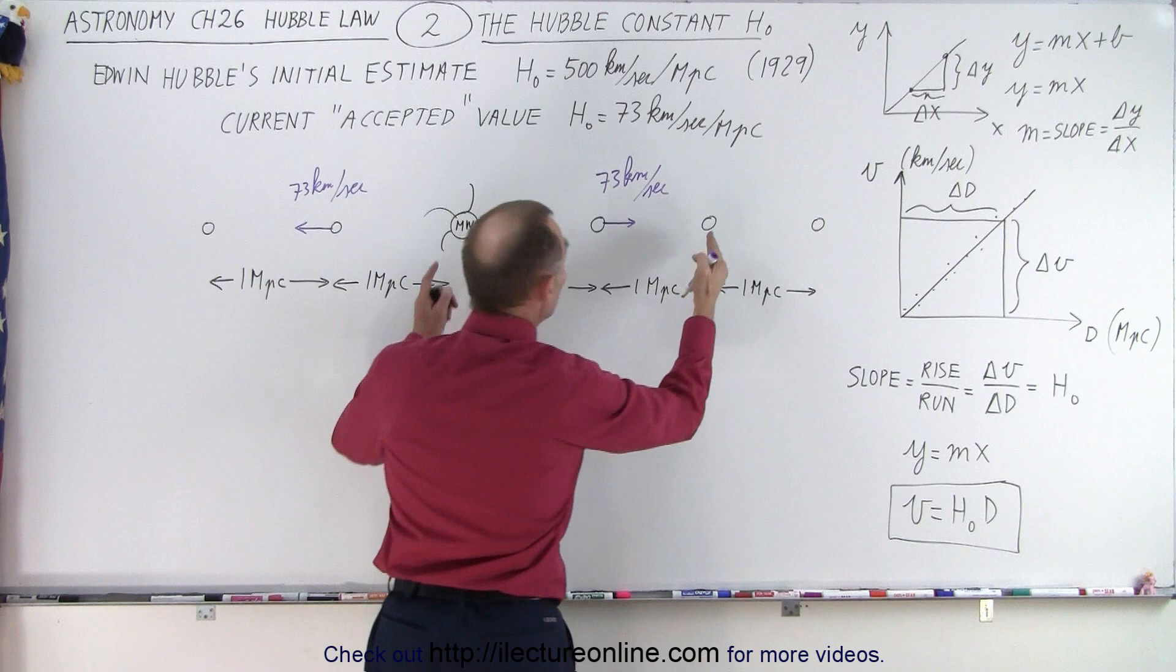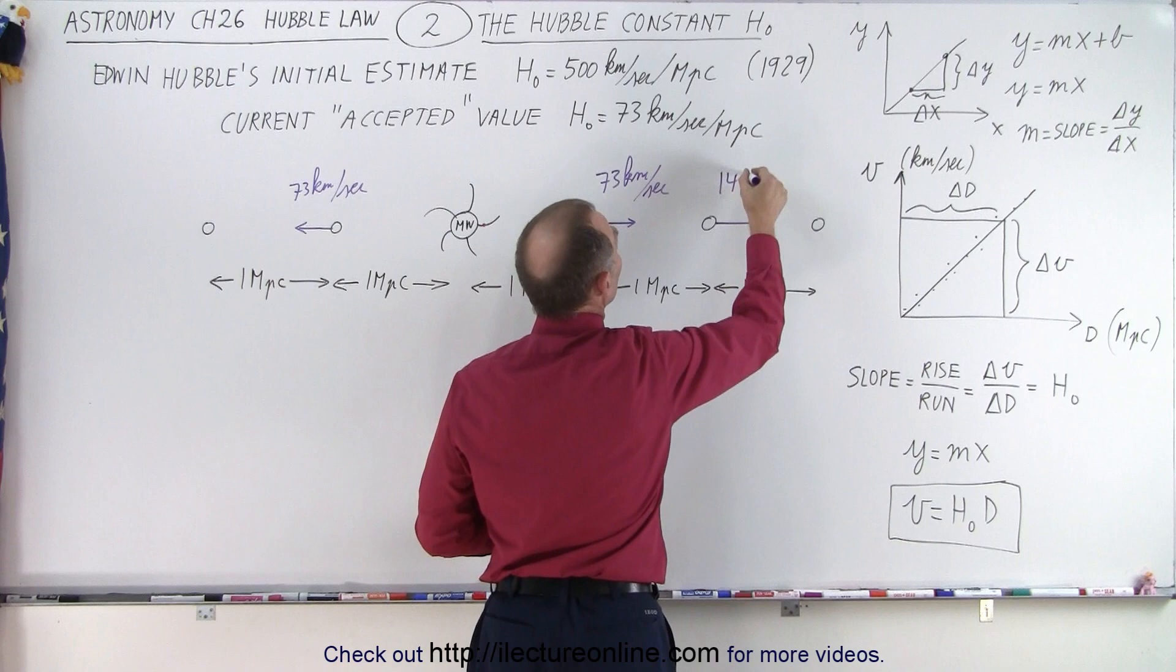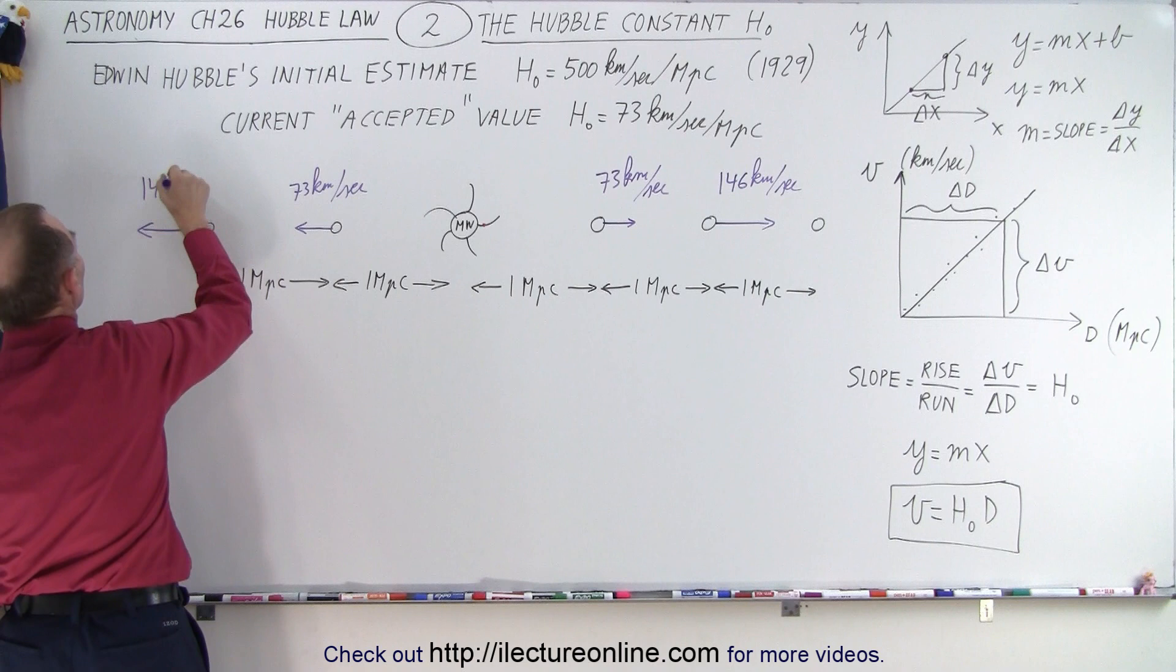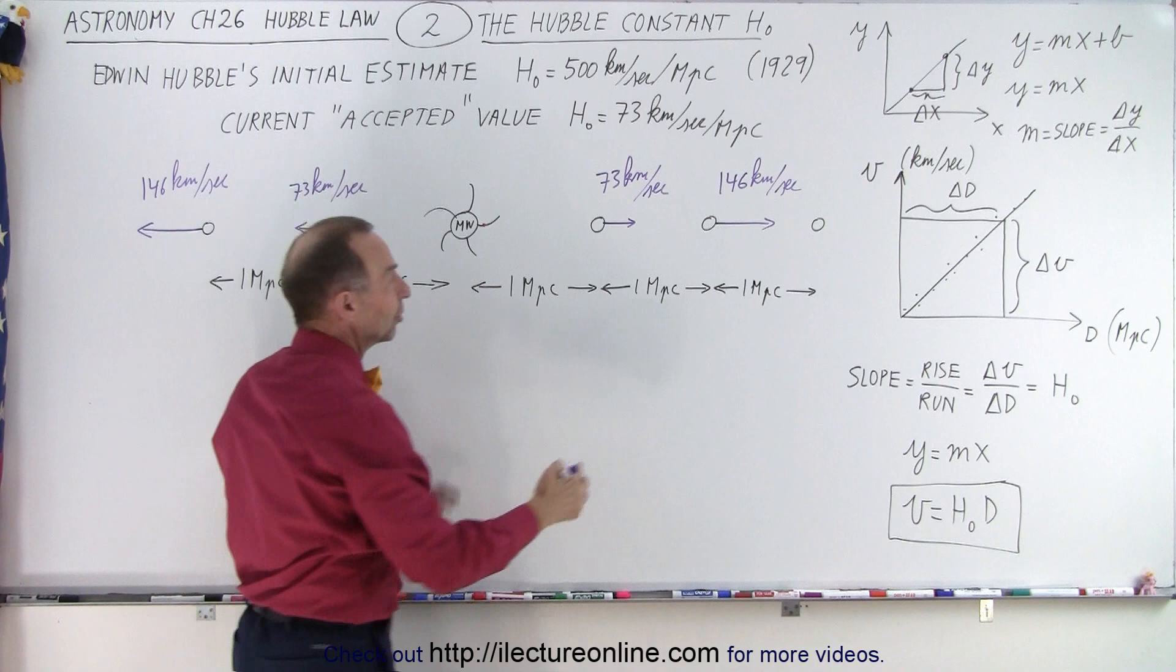What about a galaxy that's twice as far away? Let's say that galaxy is two megaparsecs away. Well, this galaxy will be moving at a speed of 146 kilometers per second. Twice as fast because it is twice as far. Take a look at this galaxy, it will be moving away from us at a speed of 146 kilometers per second because it's twice as far away.